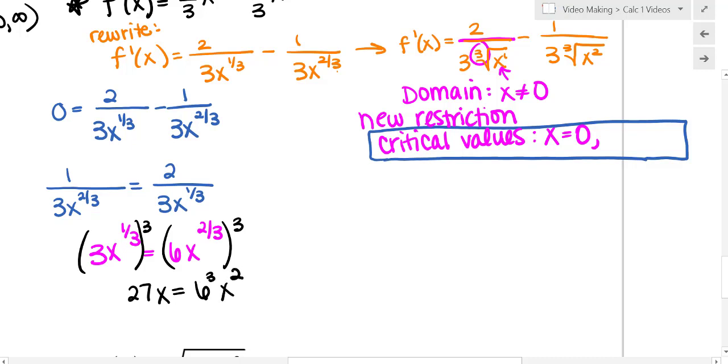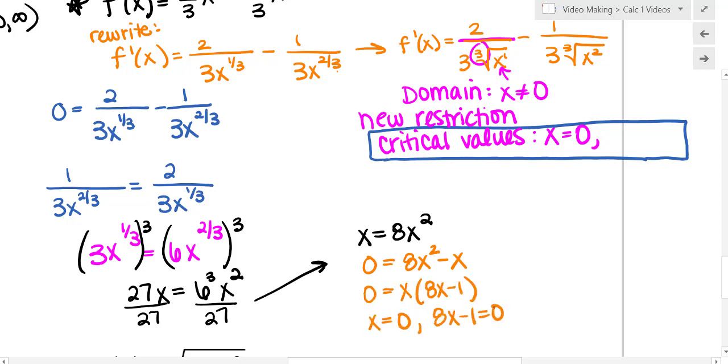If I cube both sides, I get 27x to the first equals six cubed. So again, we might want to divide by three first, but if you don't, here's what you end up with: six cubed times x squared. Six cubed is 216, but I can divide both sides by 27. That's the eight. I can set this equal to zero by subtracting the x. I would never want to divide that out because then I'm losing potential answers.